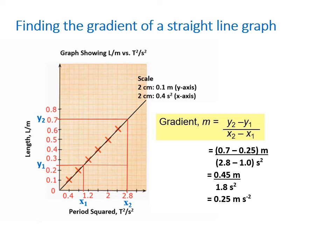Then we're simply going to substitute these values into our formula to find the gradient. So y2 is 0.7, y1 is 0.25, x2 is 2.8, and x1 was 1.0, or simply 1. Notice how we kept our units.